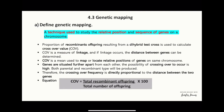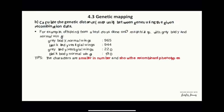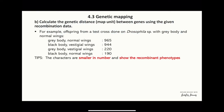We can use this equation: COV, or crossover value, equals total recombinant offspring divided by total number of offspring, times 100. We will now learn how to calculate the genetic distance between genes using given recombination data.